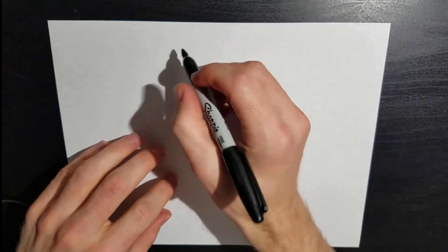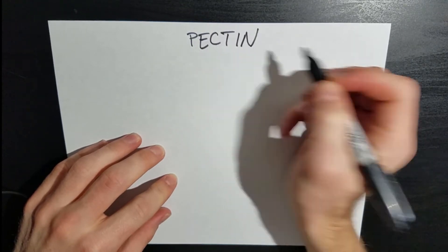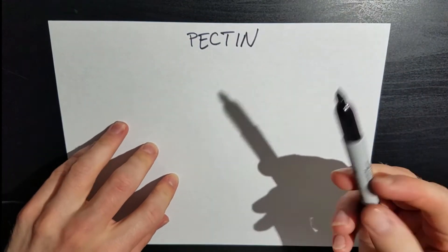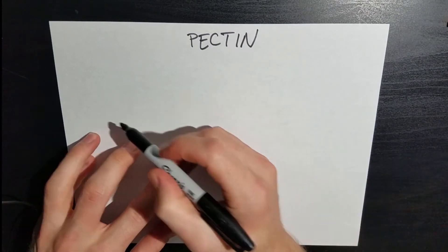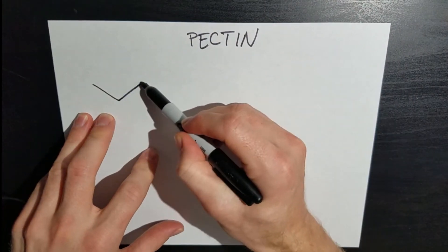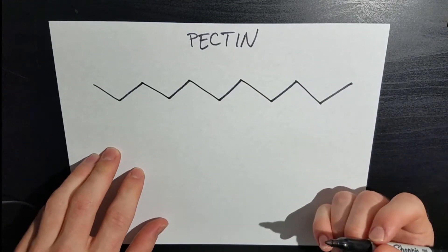Alright, so pectin—if you can think about it as a very long molecule, it's a structural molecule and I'm just going to illustrate it as a zigzag. Okay, so I've got a really really long molecule of pectin.